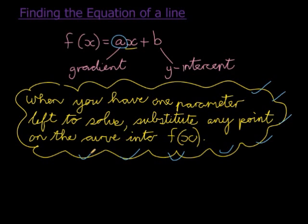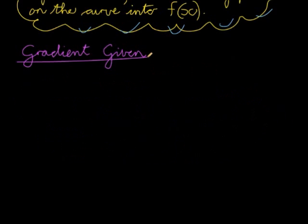There's one of two things that can happen. Either they can give you the gradient directly or indirectly. What do I mean by they give you the gradient indirectly?